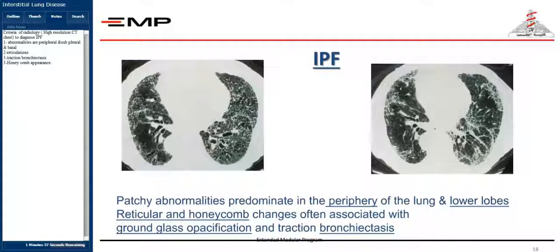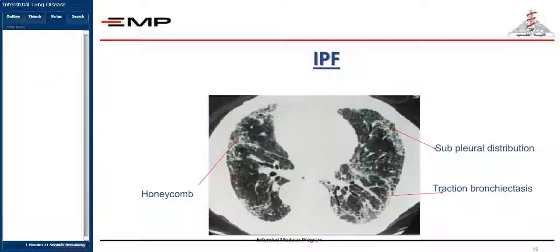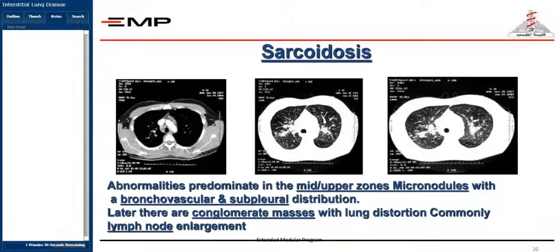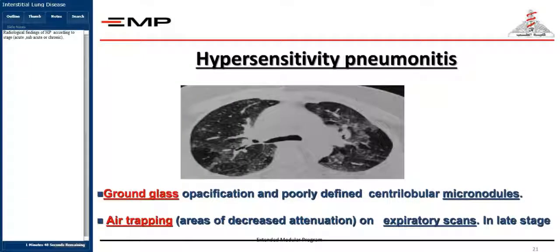The diagnostic approach includes radiology. For IPF, the criteria for radiology use high-resolution CT of the chest. Abnormalities are peripheral and subpleural and basal: reticulations, traction bronchiectasis, and honeycomb appearance. For sarcoidosis, radiological findings of hypersensitivity pneumonitis vary according to stage.